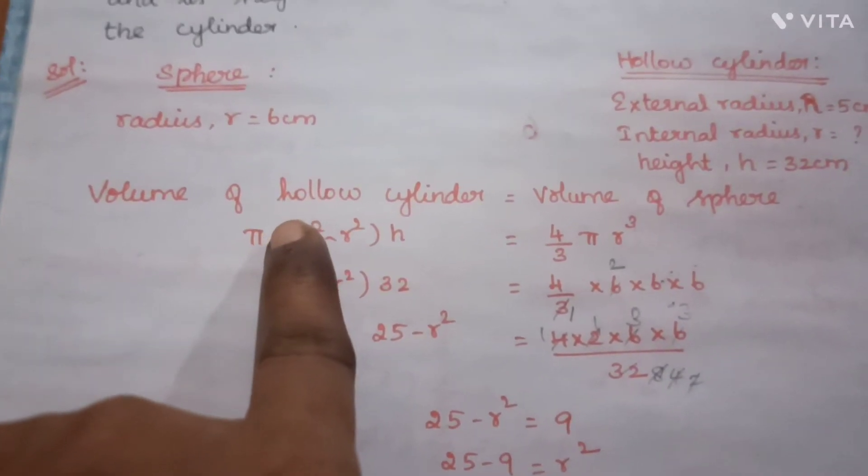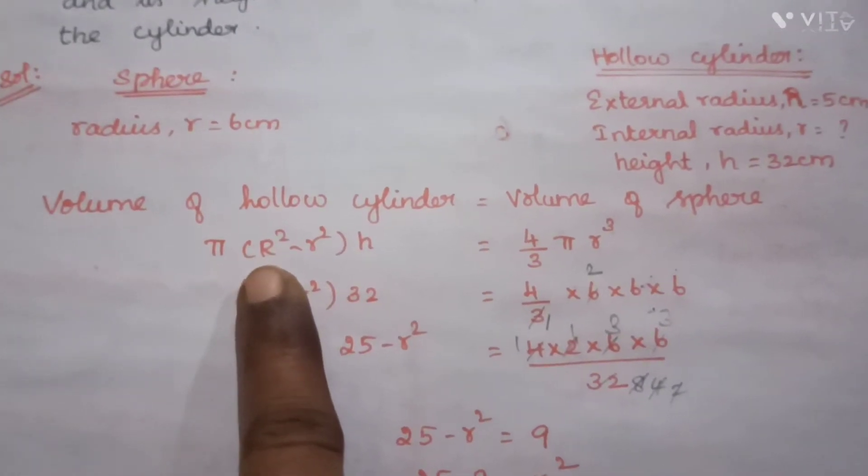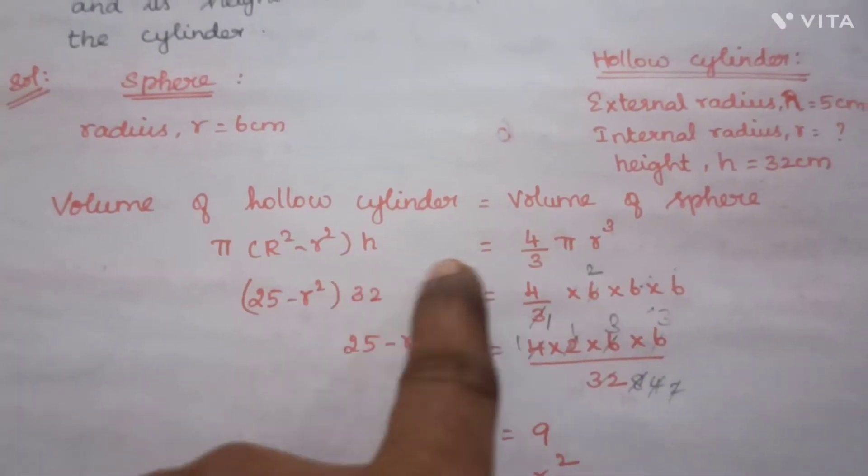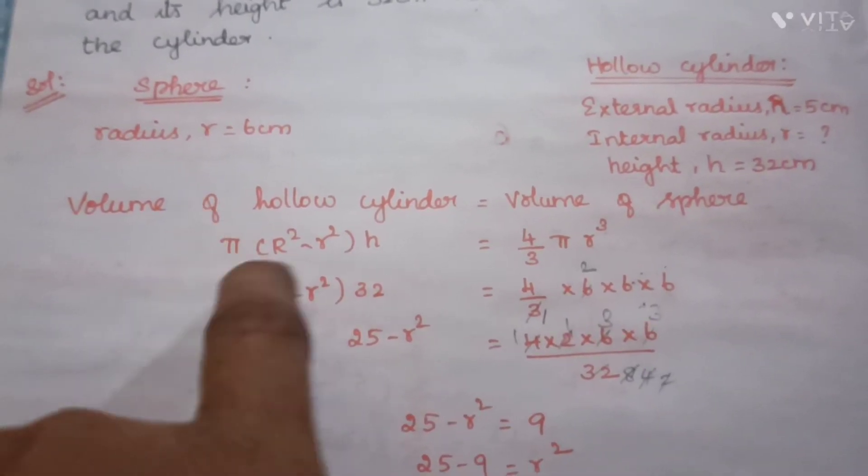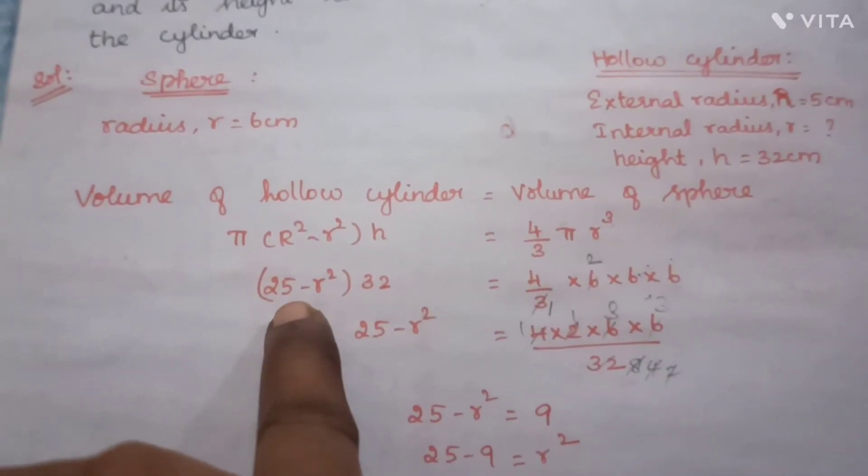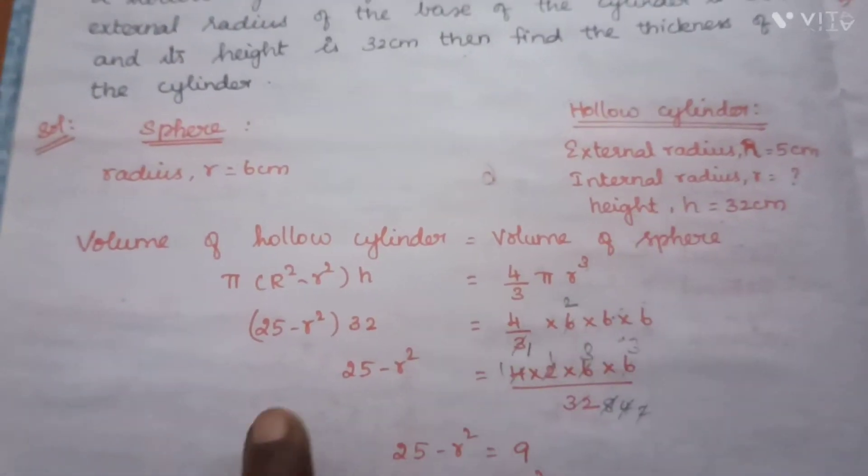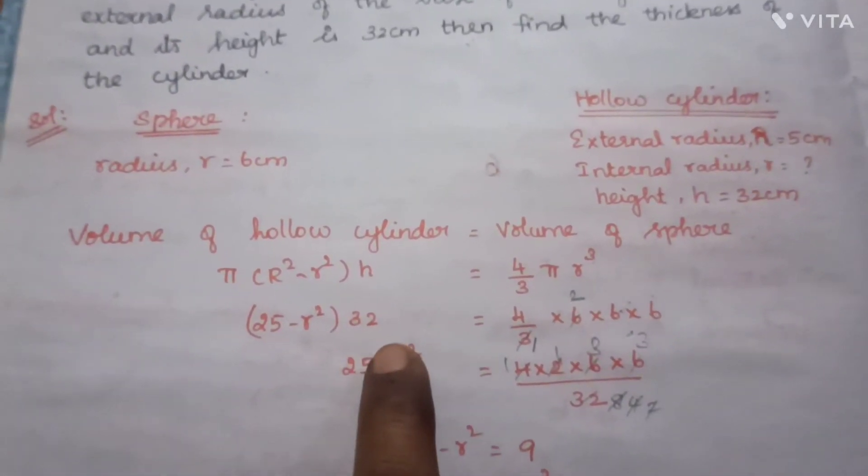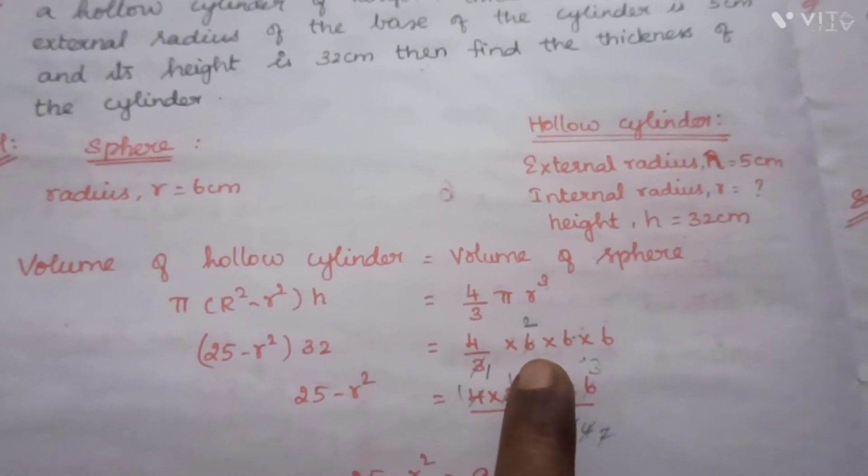Volume of hollow cylinder equals volume of sphere. The formula is π(R² - r²)h = 4/3 πr³. Pi cancels on both sides.